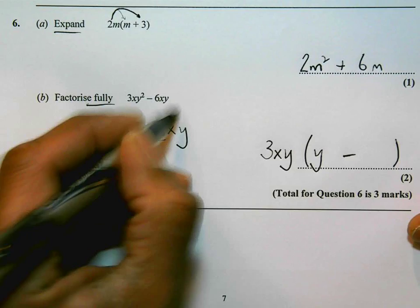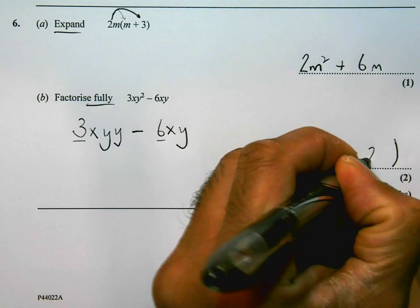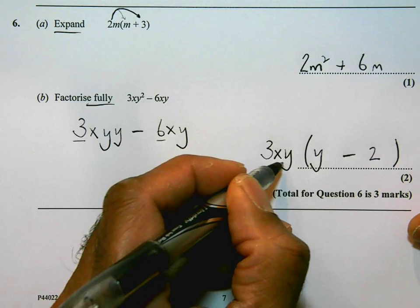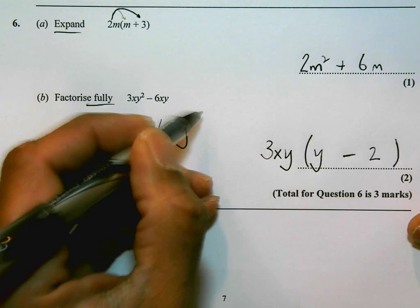3xy times something is 6xy. That something must be 2. So 3xy times y is 3xy squared. 3xy times 2 is 6xy.